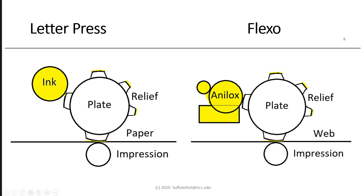Letterpress is a printing process where we use a hard, rigid, either metal or plastic relief plate. A relief plate means there's a physical, mechanical separation between the image area and the non-image area. This relief plate makes contact with the ink roller and then makes direct contact with the paper with an impression cylinder beneath it. Letterpress is the oldest and a very simple process.